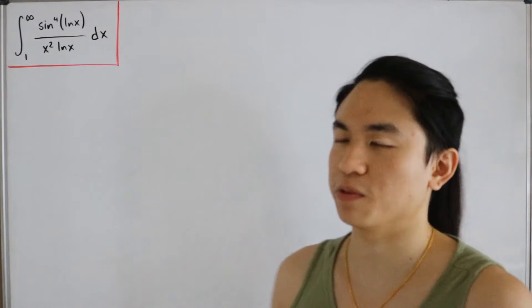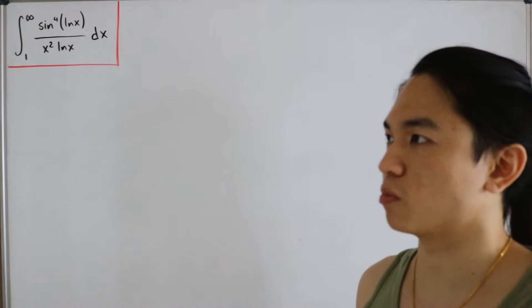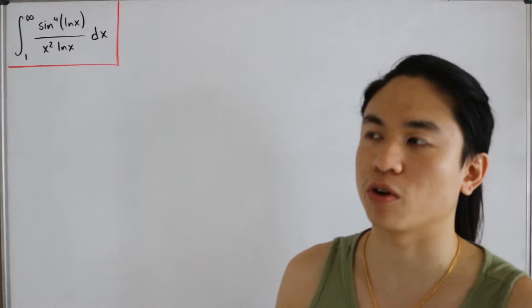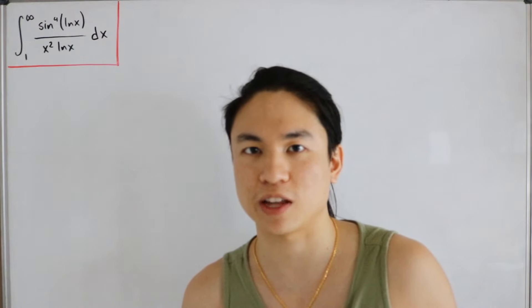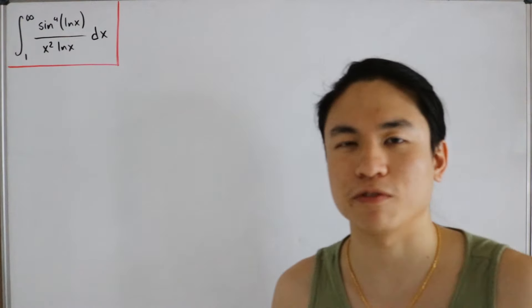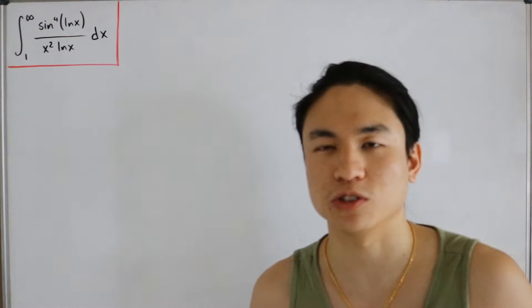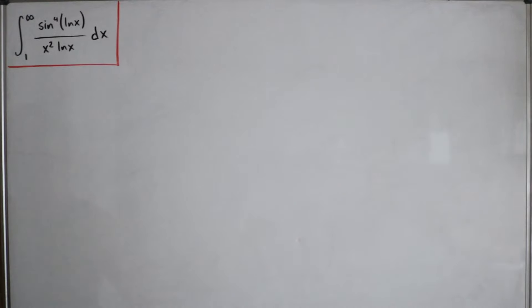This is not as overwhelming as it looks. We'll be using u-substitution as a guaranteed technique, and since we have sine to the fourth, we can expect some trig identities to rewrite that. We'll also define a function with a parameter and plug that parameter back in — that's Feynman's trick — so there's a lot of basic calculus techniques at play here. Let's jump right in.